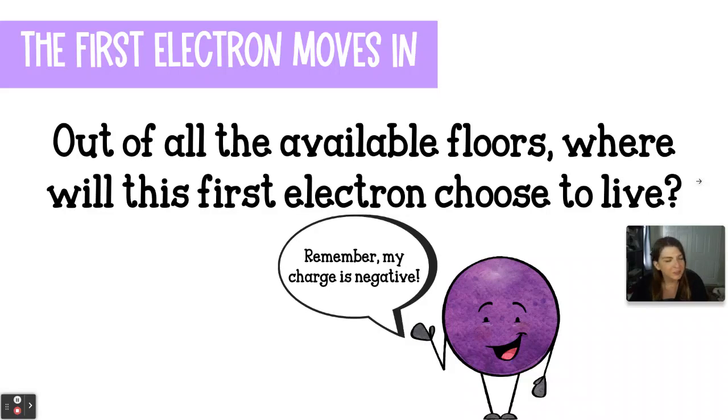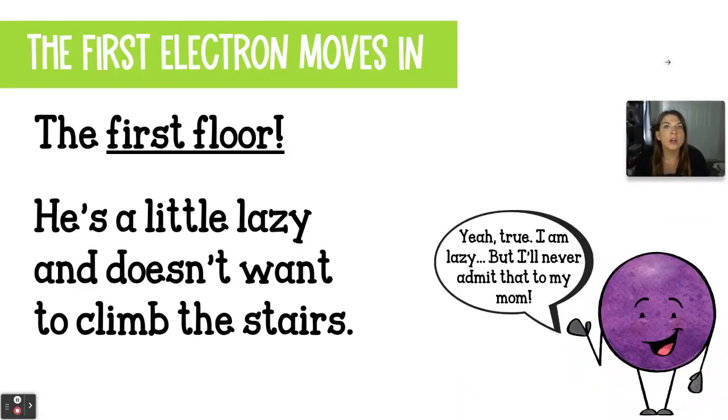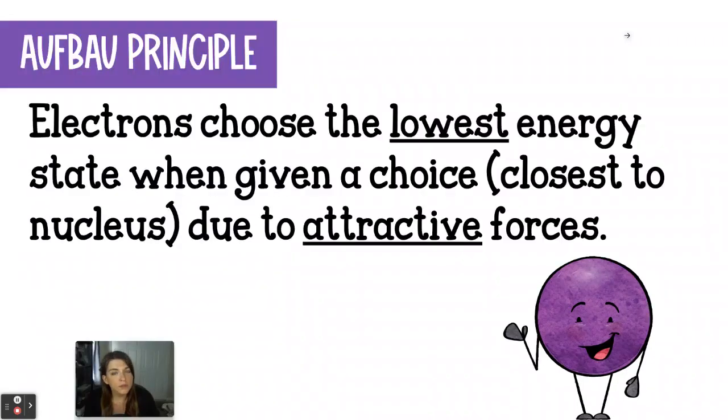This very first electron is going to move in, and he's very excited about it. So out of all of the available floors, where will this first electron choose to live? He's going to choose to live on the first floor, because he's a little lazy, and he doesn't want to have to climb all those stairs. The truth is that electrons are always going to choose the lowest energy state possible, which means they want to be as close to the nucleus as possible. The reason for this is called the Aufbau Principle.